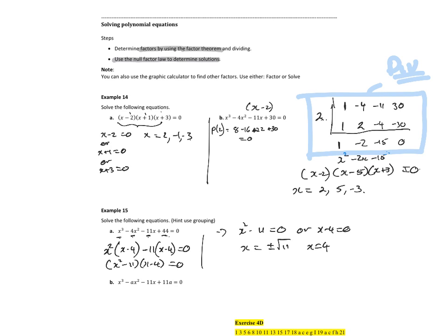Similar thing. If I take x squared at the front there, I'm going to get x minus a. If I take 11 at the front there, I'll get x minus a as well. So I get x squared minus 11, times x minus a. So there's my two factors.